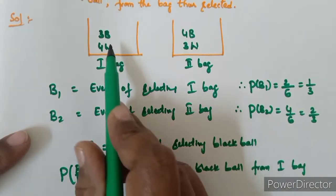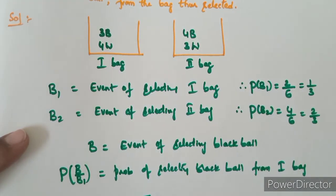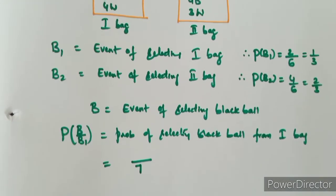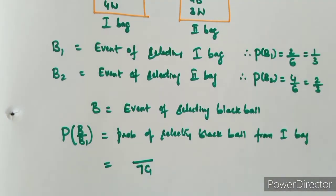In the first bag, there are a total of 7 balls. From those 7 balls, selecting one ball — P of B given B1 is 3 by 7.